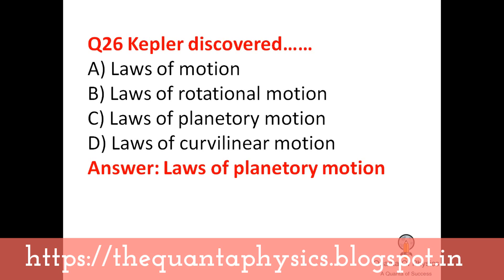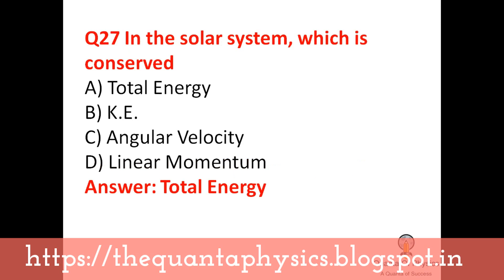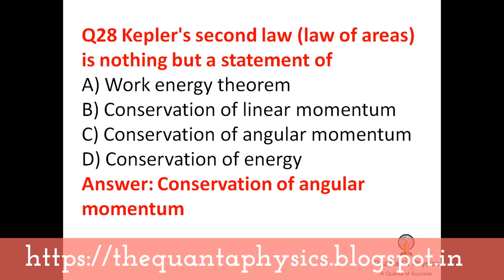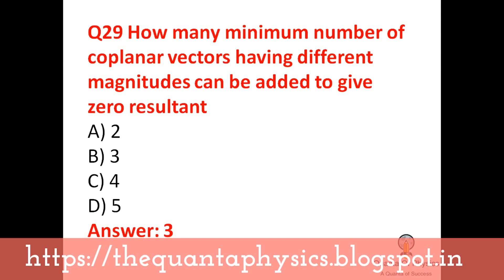Kepler discovered the laws of planetary motion. In the solar system, total energy is conserved. Kepler's second law, the law of areas, is nothing but a statement of conservation of angular momentum — this is also an important question. The minimum number of coplanar vectors having different magnitudes that can be added to give zero resultant is three.